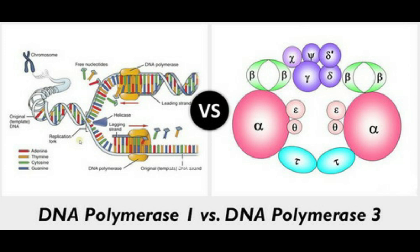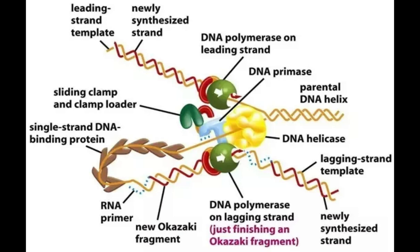One of the features of DNA polymerase 3 is that it can add nucleotides only to a chain that is already paired with the parent strand. Hence, DNA polymerase cannot initiate synthesis on its own. Instead, another enzyme, primase, constructs an RNA primer — a sequence of about 10 RNA nucleotides complementary to the parental DNA template. DNA polymerase 3 recognizes the primer and adds DNA nucleotides to it to construct the DNA strand. The RNA nucleotides in the primer are then replaced by DNA nucleotides.